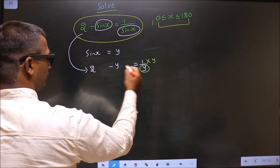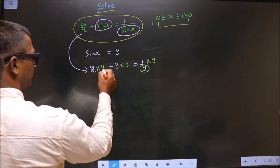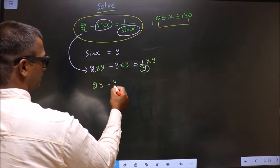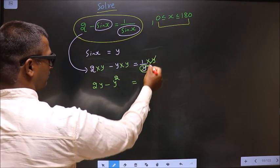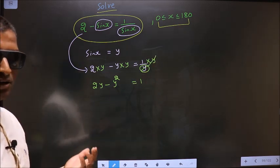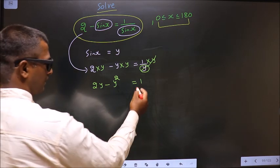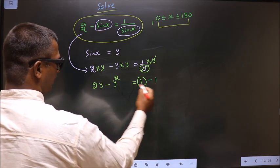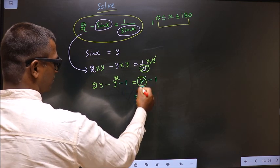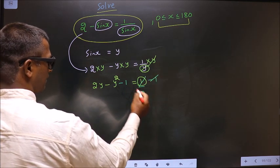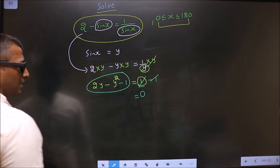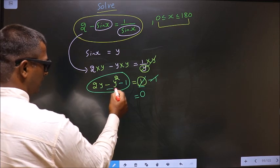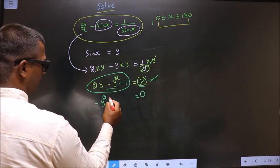So now you get 2y minus y squared equals 1. Now you bring all the terms to one side. This 1 should not be present on this side. To remove plus 1, you subtract 1 on both sides, so here it cancels out and you get 0. I rearrange this in proper quadratic form: minus y squared plus 2y minus 1.